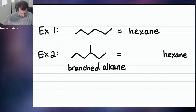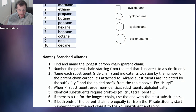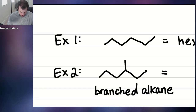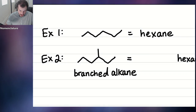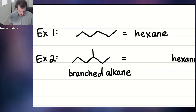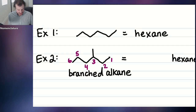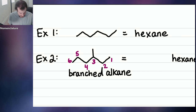Step two says: number the parent chain starting from the end that's nearest to a substituent. So we could start counting from either end. The right side is nearer to the substituent, so we number our chain: one, two, three, four, five, six. Our branch, or substituent, is coming off of position number three. That's going to be important for our name.